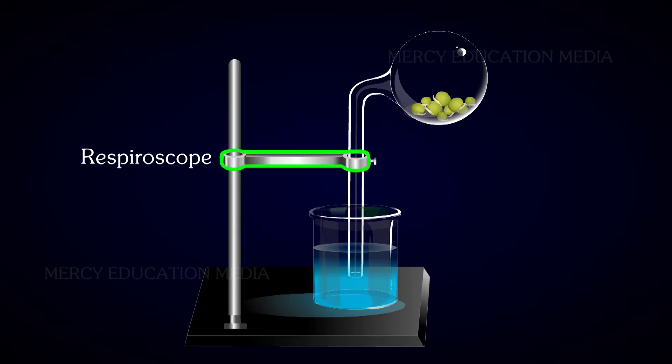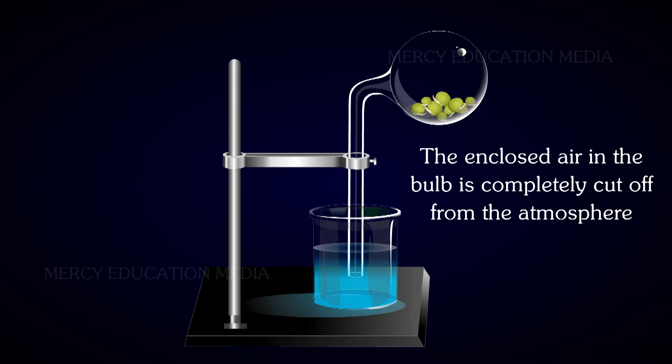The Respiroscope is fixed in the vertical position with the help of a stand. Thus, the enclosed air in the bulb is completely cut off from the atmosphere.